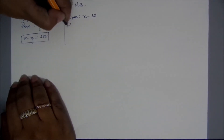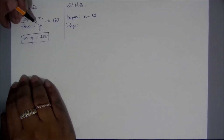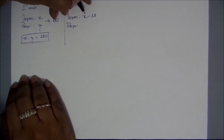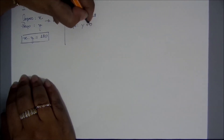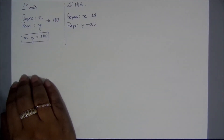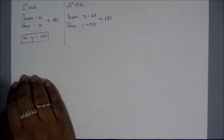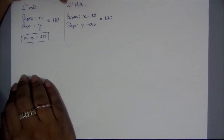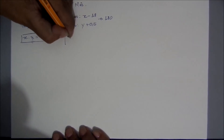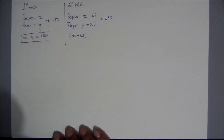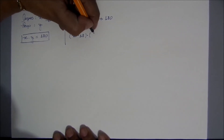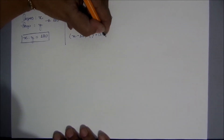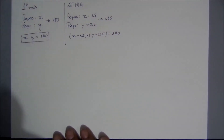O preço Y aumentou no segundo mês. Se ele aumentou, vou ficar com o valor que eu tinha antes mais 50 centavos. Porém, a arrecadação foi a mesma: 180 reais. Então, se eu vendi X menos 18 copos pelo preço de Y mais 0,5 e arrecadei 180, eu posso montar a minha segunda expressão: (X menos 18) vezes (Y mais 0,5) igual a 180 reais.